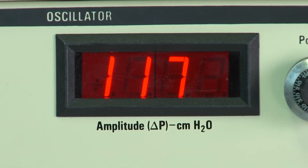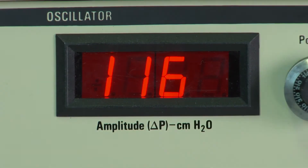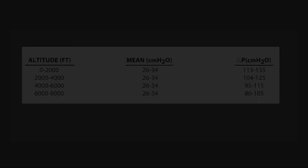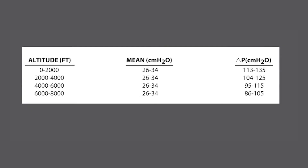When a stable amplitude reading is obtained, verify that the amplitude and mean airway pressure readings are within the range specified for your corresponding altitude. Refer to the chart located on the top of the ventilator.